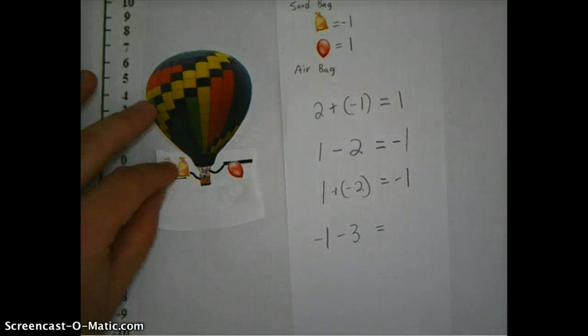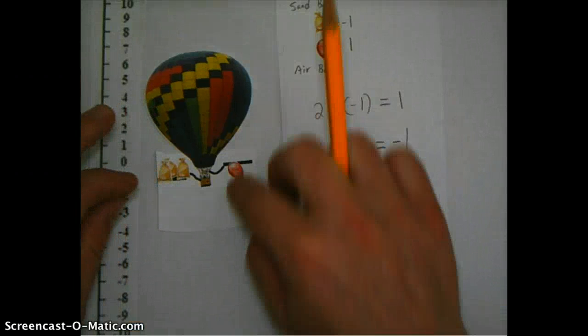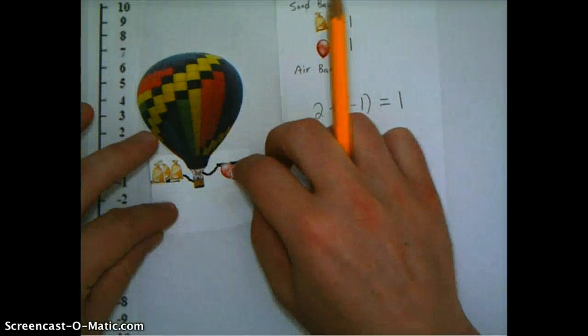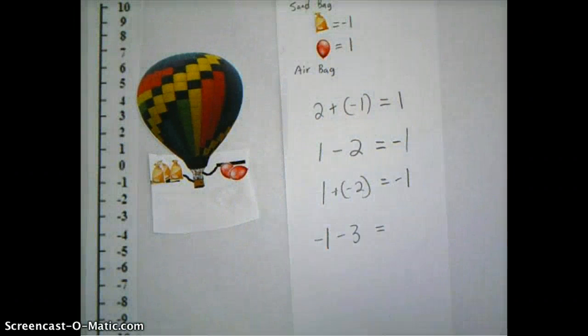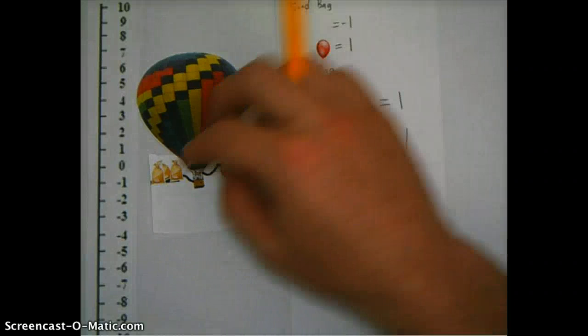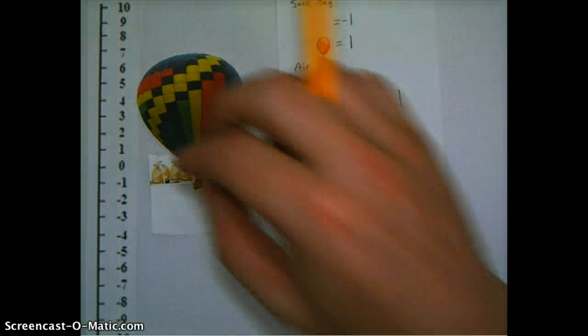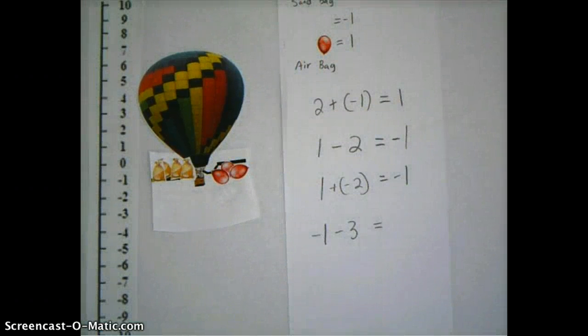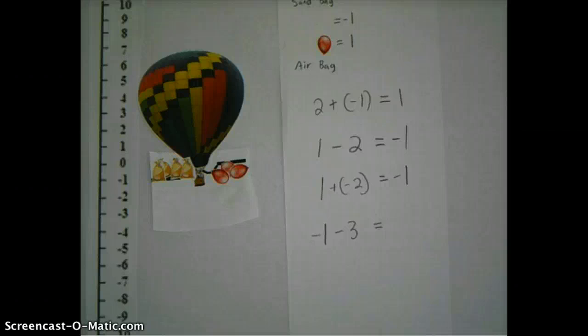And now I'm going to do that again. Add one sandbag and one airbag. They cancel each other out. And I'll do that one more time. Let's do one from over here. Add one more airbag. So I've got four of these and three of the airbags. So now again, I'm still at minus one. That's my starting point.